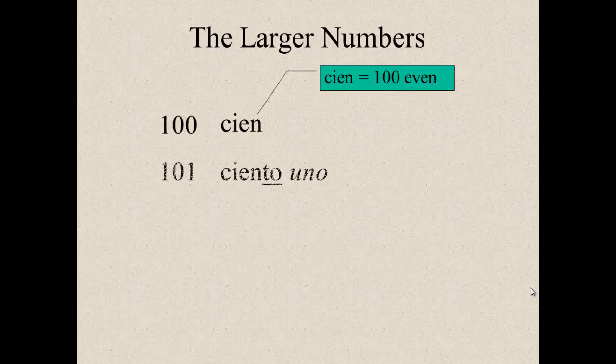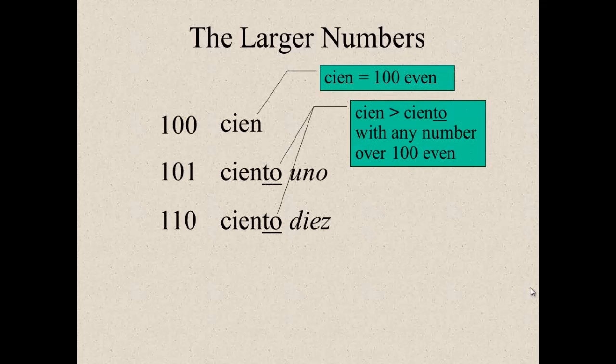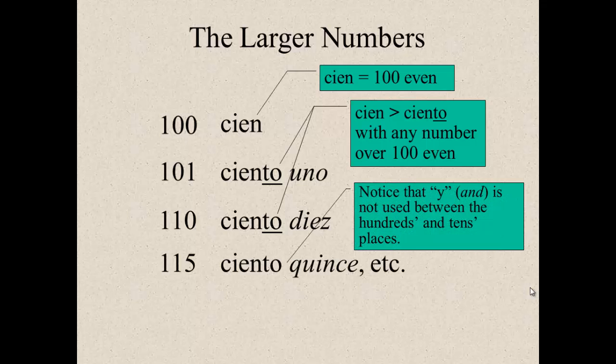The larger numbers. For cien, it's just for 100 alone. One hundred even. When you get larger than 100, for 101, 110, 157, you change the cien to ciento. So, ciento uno, ciento diez. Notice that I'm not putting a y in there. I'm not saying ciento y uno and ciento y diez. Or ciento quince.